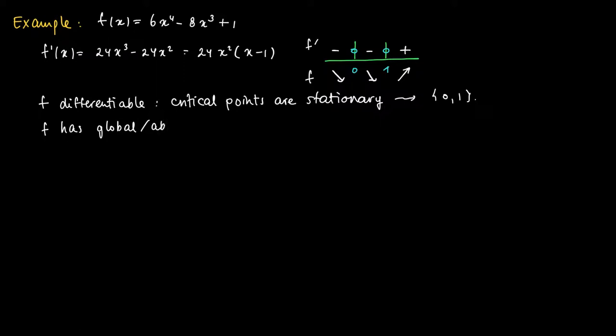It's clear that towards 1 the function is strictly decreasing and after 1 it's increasing, so 1 is actually a global minimum. f(1) is the minimum value and the value is given by f(1) equals 6 minus 8 plus 1 equals minus 1.